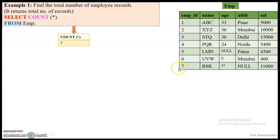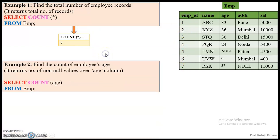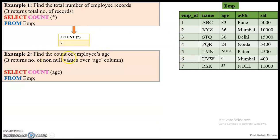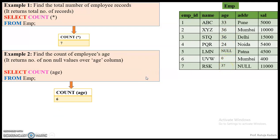So the output will be seven. The second example is to count the employees' age — that is, to find the count of non-null values in the age column. So we go to the age column and count: one, two, three, four — null will not be considered — then zero, that is five, and 37 is six. So the output of this particular query will be six.